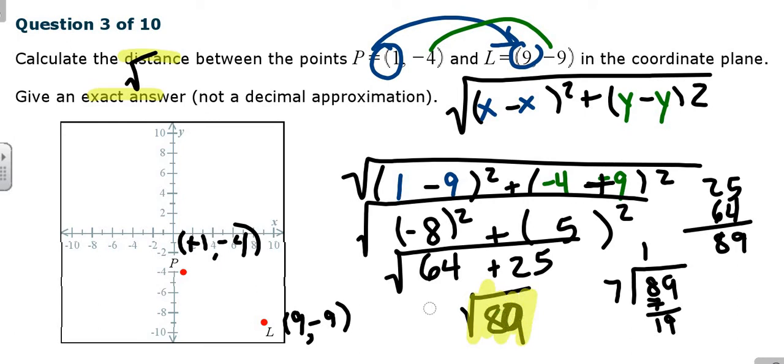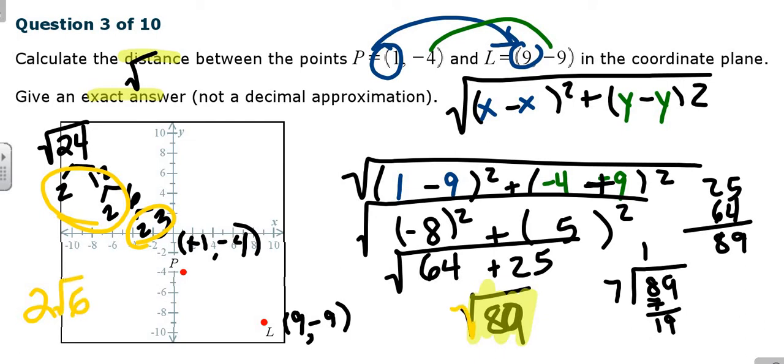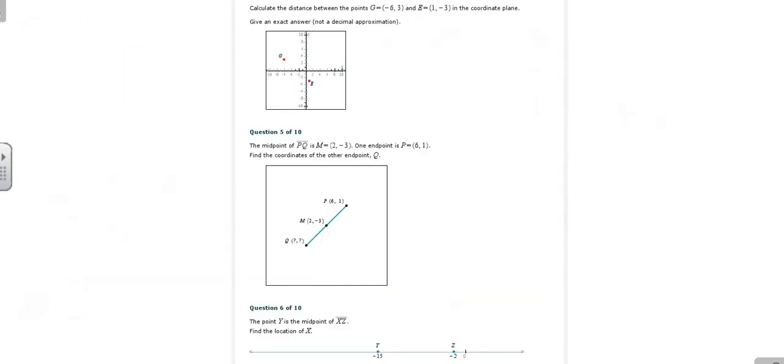So your final answer is going to be root 89. If it wasn't a prime number, for example, if it was root 24, you would factor, and then you would pull out your duplicates. So the exact form of root 24 would be 2 root 6. If you can simplify, do so. But if you can't, you literally just leave it under the radical sign.